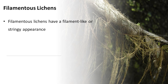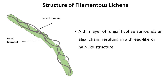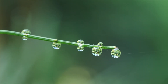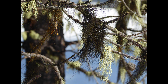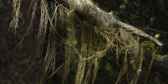The last morphological type is filamentous lichens. Filamentous lichens have a filament-like or stringy appearance and are often found on soil and different organic materials. Unlike most other morphological forms, a filamentous lichen's morphology is determined by its algal partner rather than its fungal partner. A thin layer of fungal hyphae surrounds an algal chain, resulting in a thread-like or hair-like structure. Because of their high surface-to-mass ratio, they can quickly absorb moisture, enabling them to take advantage of even short periods of high humidity such as fog or dew. Lichenologists tend to consider filamentous lichens to be a type of fruticose lichen, and this is an uncommon growth form found in only a handful of genera.